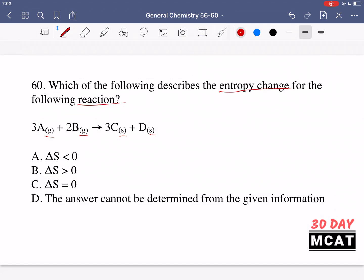So option A is correct, entropy is less than zero. Options B and C are incorrect. D says the answer cannot be determined from the given information, but it can be. Just think about what entropy is and whether order is being changed, and yes you can tell. A is the correct answer.